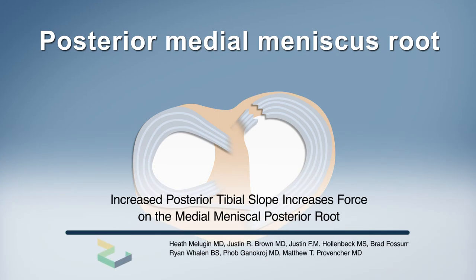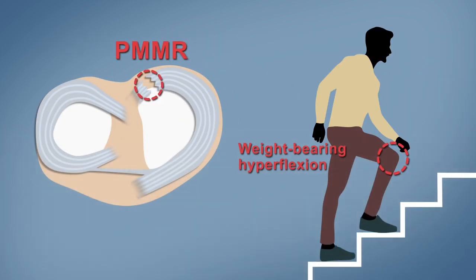Most injuries to the posterior medial meniscus root, or PMMR, are chronic and typically caused by a movement that is seemingly benign when a patient is weight-bearing in a hyperflexed position.